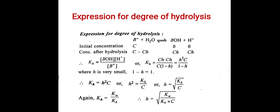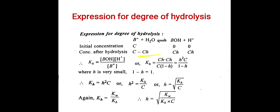Now we have to derive an expression for the degree of hydrolysis, denoted by H. We consider the same reaction: B⁺ reacts with water to form BOH and H⁺. Initially the concentration of B⁺ is C, and the concentration of BOH and H⁺ are both 0, since there is no hydrolysis. After hydrolysis, the concentration of BOH is CH, of H⁺ is CH, and the remaining concentration of B⁺ is C minus CH.